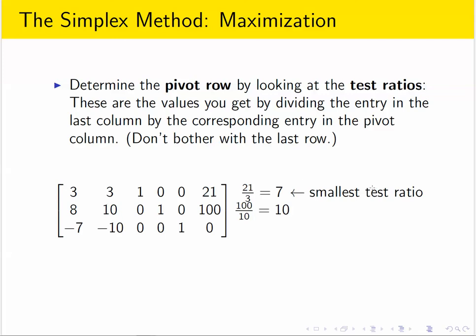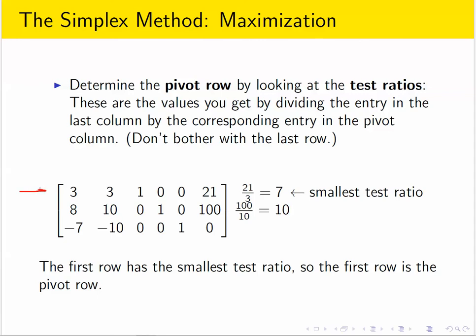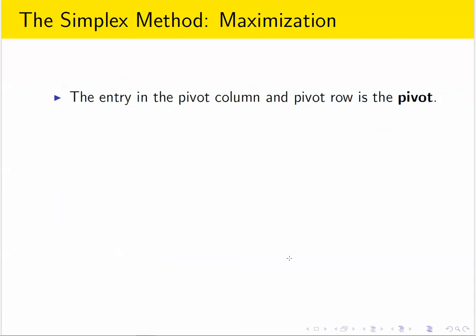Whichever row has the smallest test ratio becomes the pivot row. So we have the first row is the pivot row. The second column is the pivot column. So the entry that lines up there is called the pivot.